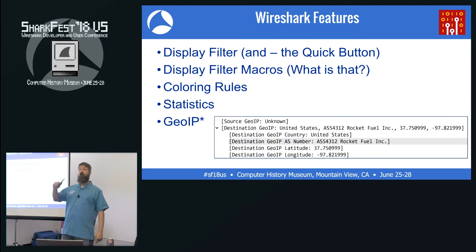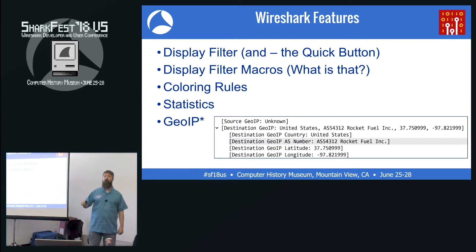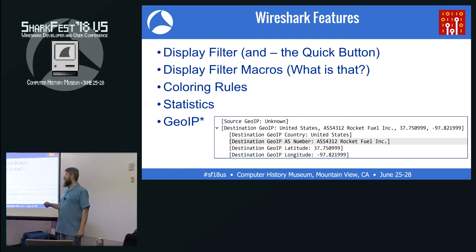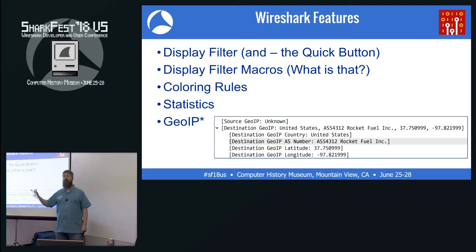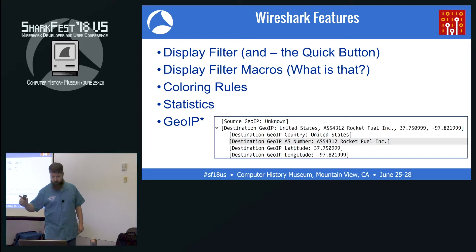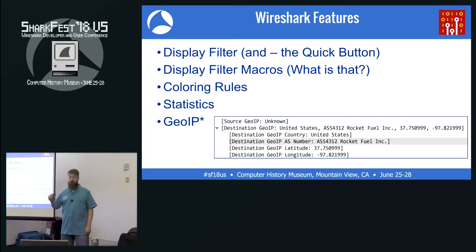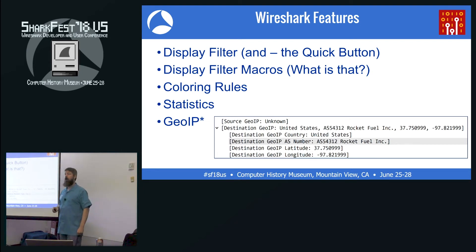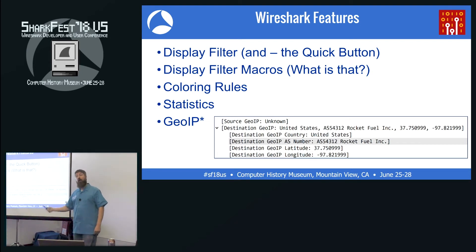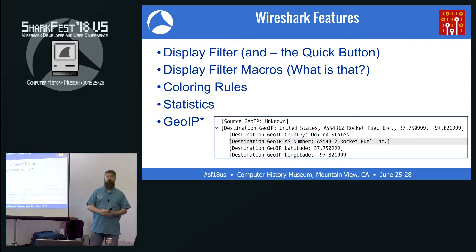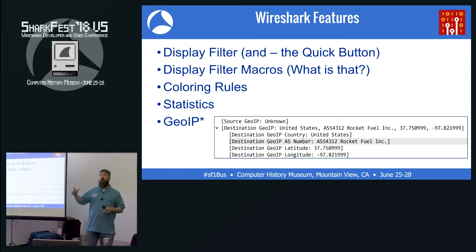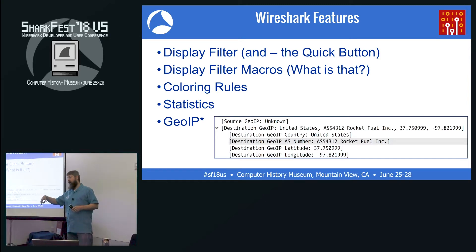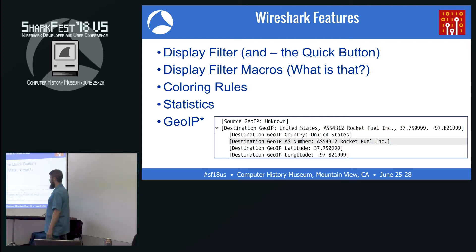For those of you who haven't used it: GeoIP uses a MaxMind database that will tell you the estimated location — latitude and longitude, city, or the ASN number — of an IP address going through your capture. So you can actually create filters based on that information, like filtering by country or ASN number, as you can see up here.